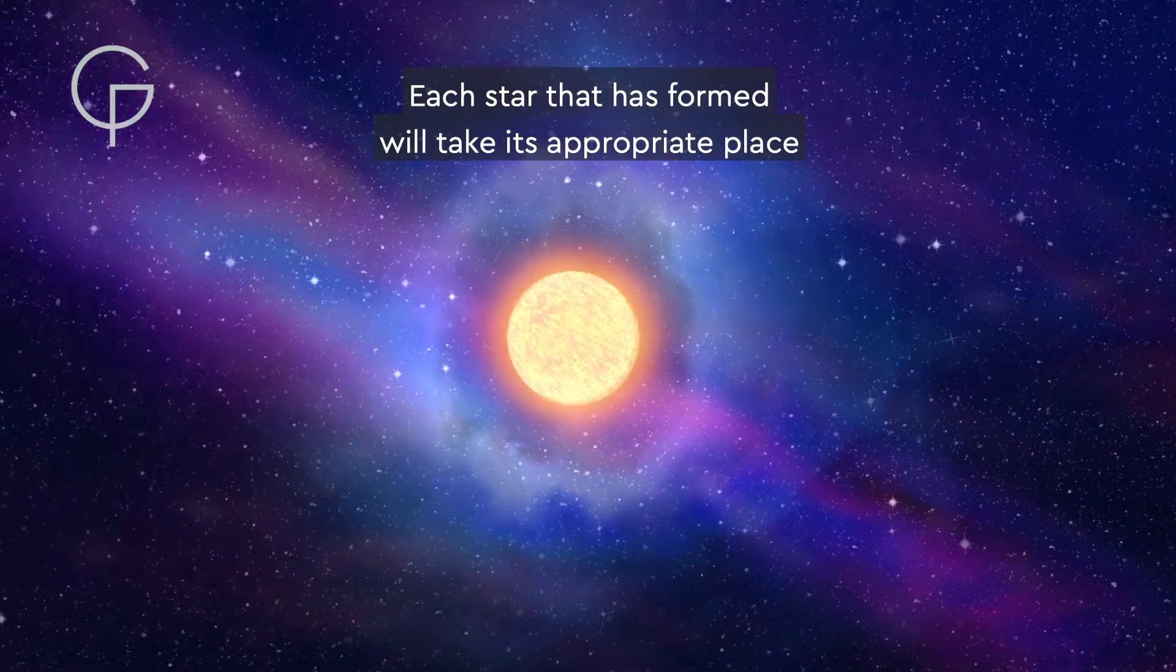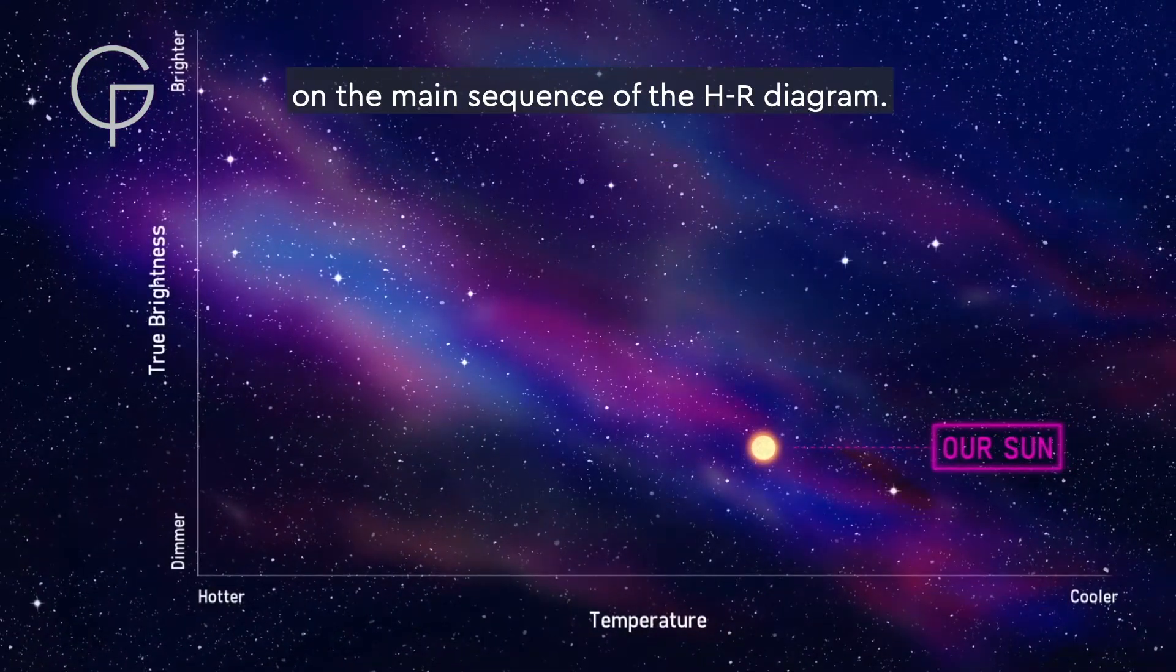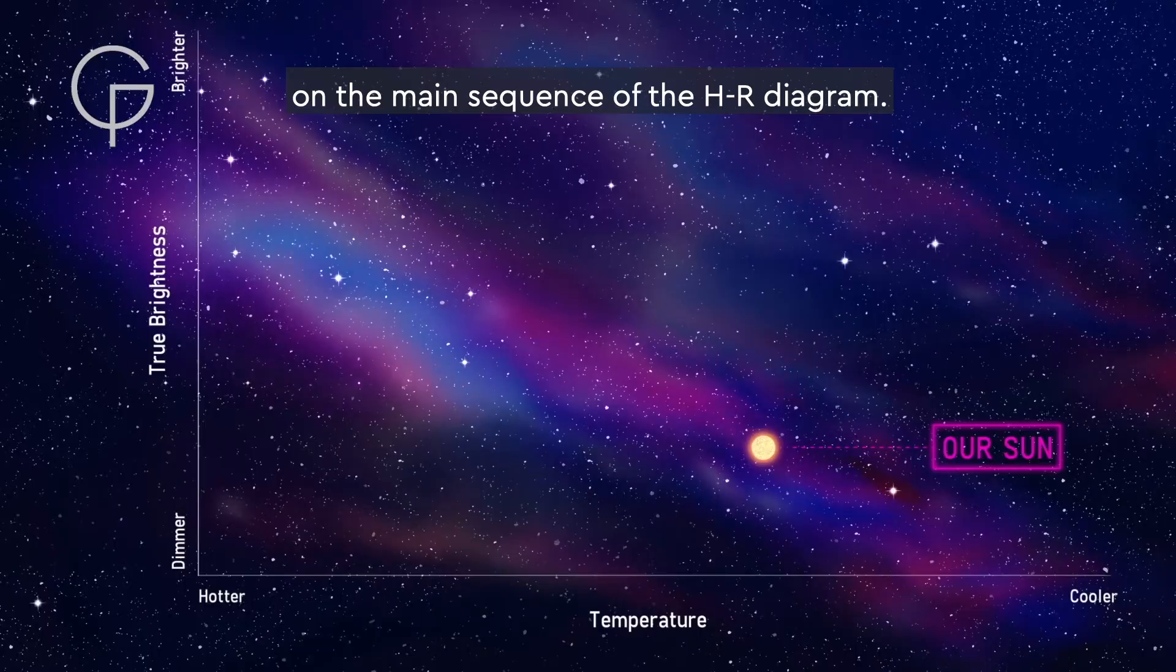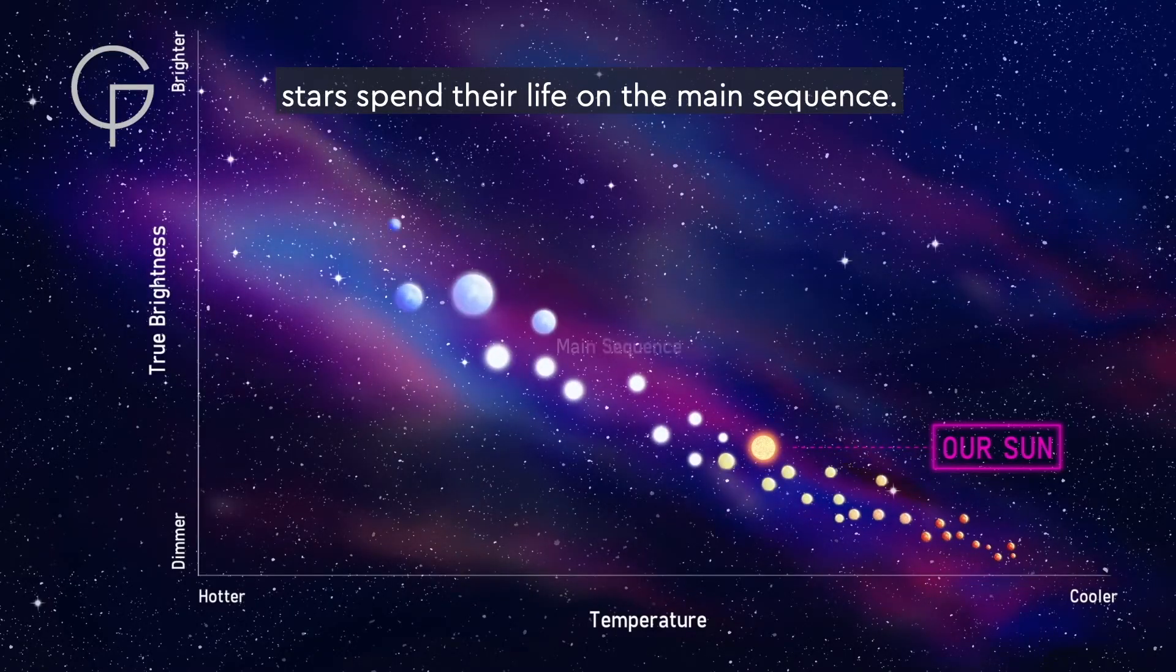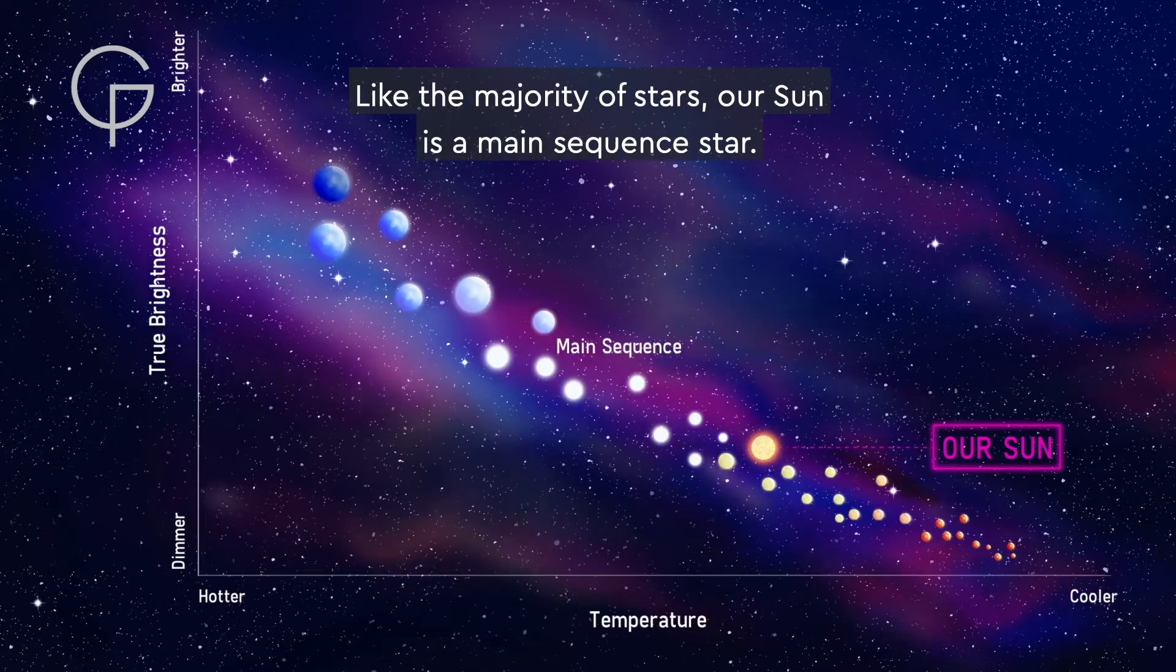Each star that is formed will take its appropriate place on the main sequence of the HR diagram. While they fuse hydrogen in their cores, stars spend their life on the main sequence. Like the majority of stars, our Sun is a main sequence star.